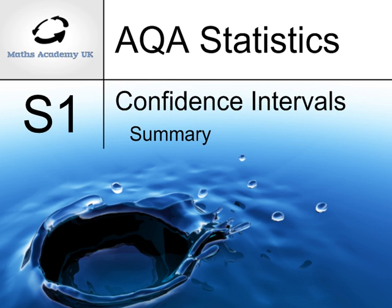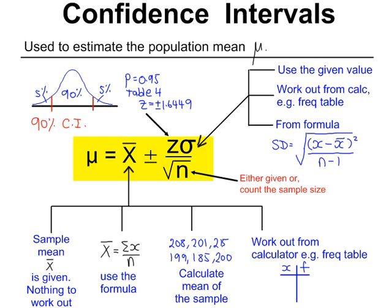A summary of confidence intervals. Let's start with the formula for confidence intervals. We're trying to estimate the population mean, and to do so you need to take a random sample from your population and then work out the sample mean.